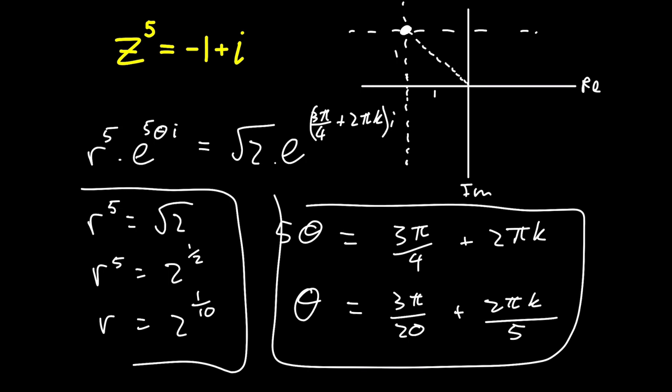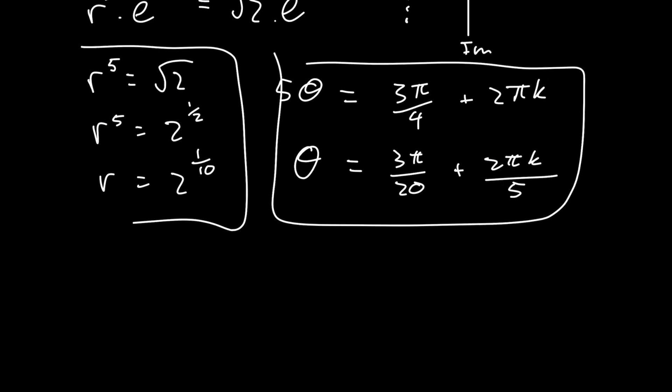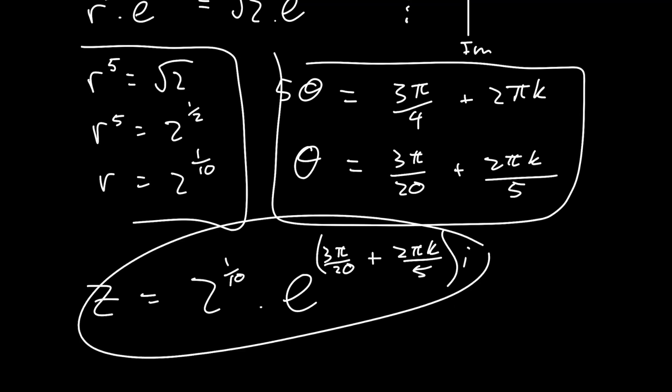Now all that's left to do is to rewrite this complex number z. So we have z is equal to two to the power of one over ten times by e to the power of three pi by 20 plus two pi k over five i. Now we could leave it at that,